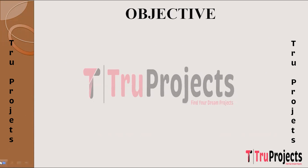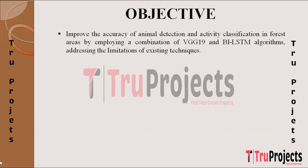The primary objective of the project is to elevate animal detection accuracy in forests by integrating VGG-19 and BiLSTM algorithms, and to address limitations in existing techniques, ensuring more precise identification and classification of animal activities, improving overall monitoring efficiency and reliability in forest environments.